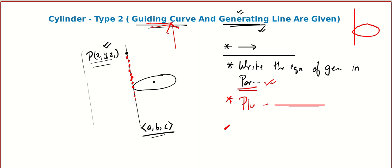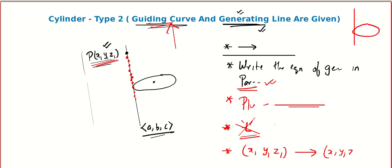Once you do that, you will get the relation between x1, y1, z1 in terms of the parameter. Now your job is to destroy the parameter — remember, whatever we introduce in a problem, eliminate those quantities and you will get the locus. So the next step is to eliminate the parameter. And the last thing to do is generalize: we started with the locus point x1, y1, z1, and since all the generating lines will have the same relation, we generalize it with the point x, y, z.